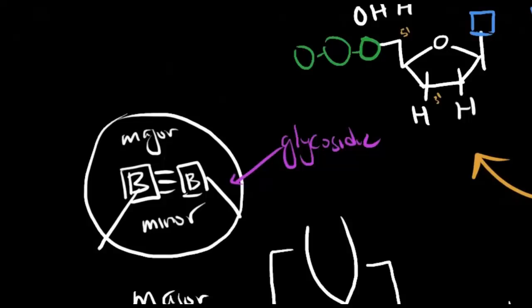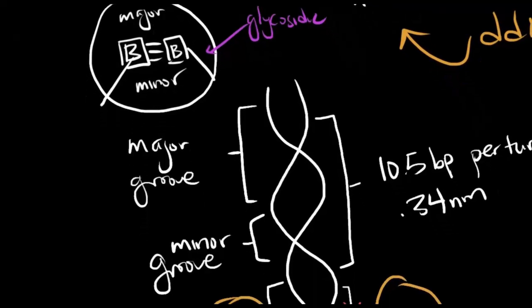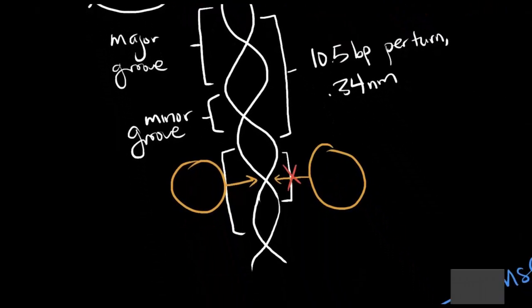When one nucleotide is base paired with another, it doesn't make a bond of 180 degrees. Instead, it's close to 90 degrees due to the glycosidic bonds. When DNA is twisted in the double helix form, that bend creates two different grooves: a major and a minor groove. One turn of a DNA helix has about 10.5 base pairs in it and is about 0.34 nm in height. The DNA itself is about 2 nm wide. The significance of the major and minor grooves is that most proteins can't access the DNA from the minor groove — instead, they only fit inside the major groove.